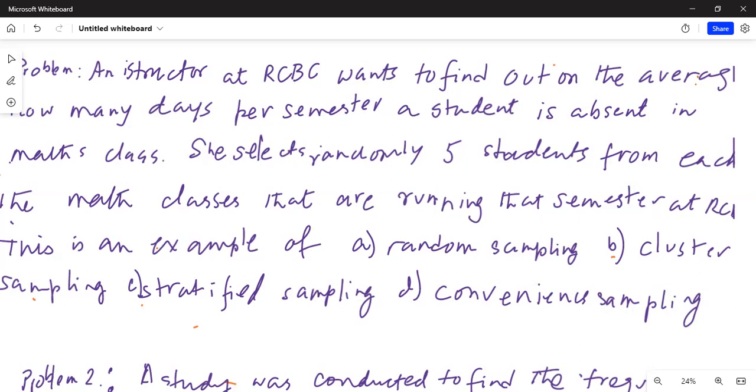So our correct answer is this one, C, stratified sampling. Why? Because there are strata or groups of math classes, then five students have been randomly selected from each class to interview and find out how many days they're absent in the math classes entire semester. So this is an example of stratified sampling.